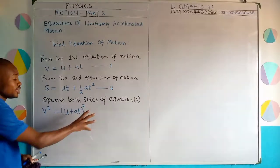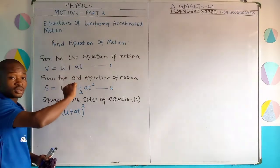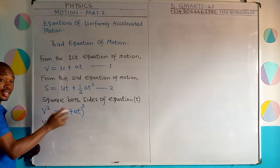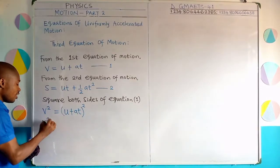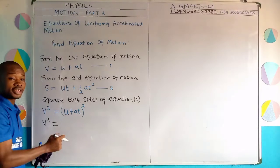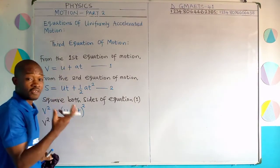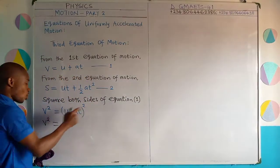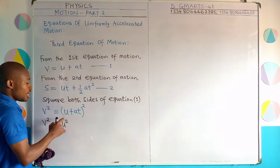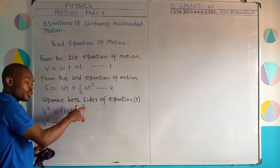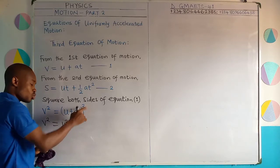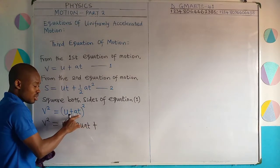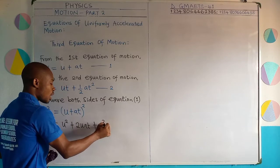Let us see how we expand this. I need to put all the right hand side in brackets and then square it. This is going to give us V squared. I'm going to expand the right hand side using the knowledge of binomial expansion in mathematics. It's going to be U squared, then U times A times T times 2, which gives us plus 2UAT, and then AT squared, which gives us A squared T squared.